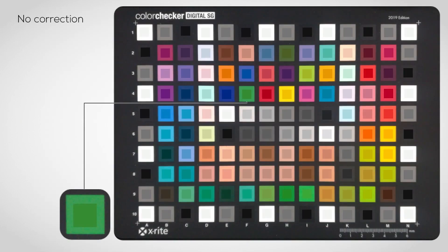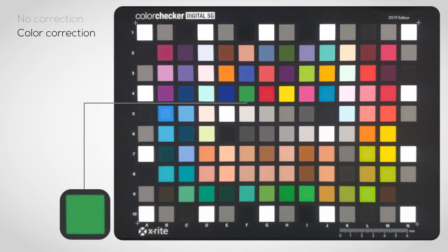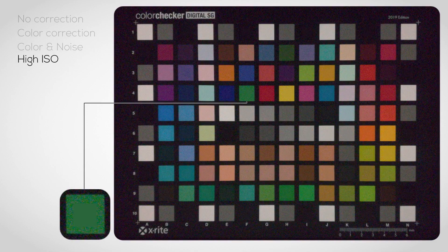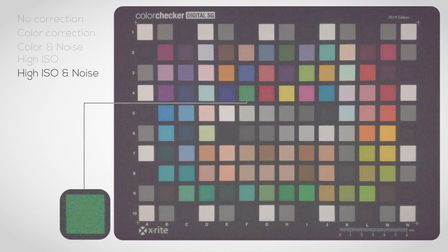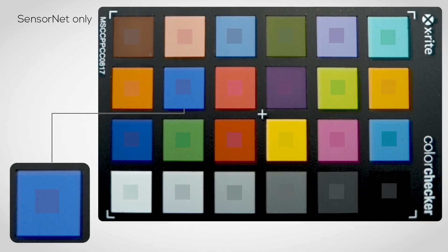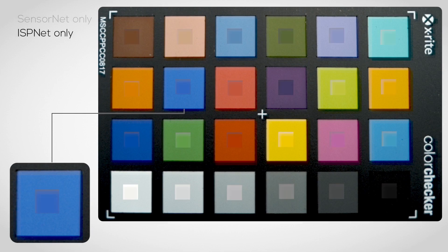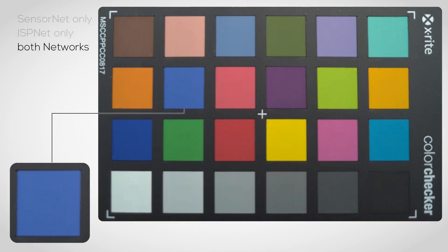We add noise to the initial rendering and map rendered colors to the color space of the real camera, in order for them to match the appearance of a captured object. We find the mapping using the second neural network, SensorNet, which we train with pairs of rendered and captured colors. Finally, we apply ISP-Net for compositing real and virtual content and for mapping the colors and noise to output color space. We train this network using a dataset of raw and output image pairs, so that the network can learn the behavior of the camera image signal processor.